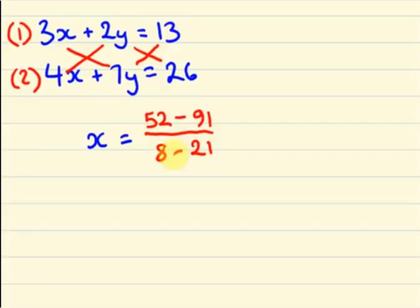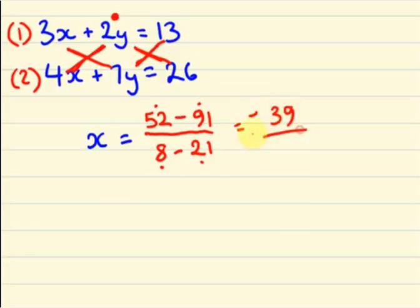You can see the pattern: 2 this side with 26, and 2 this side with 4 as 8, and 7 this side with 3. So 52 minus 91 divided by 8 minus 21 equals minus 39 divided by minus 13. Having minus signs in both numerator and denominator, they cancel out. 13 is 3 times 39, so x equals 3.